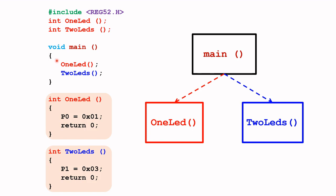Let's take a look at another demonstration program. This time, I'm getting the main function to call two functions. The one function will be the one LED function that we've seen earlier, and it will also be calling another function called two LEDs. This is the overall view of the demonstration code, and here is the implementation in C code.